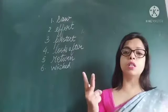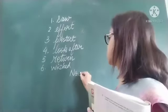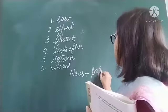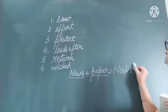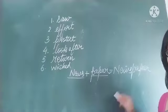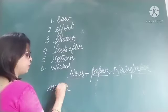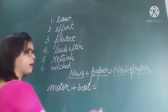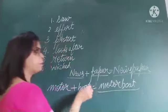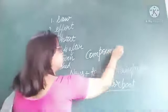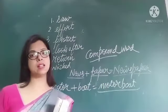Next is compound words. Compound words are formed when we combine two words to form a single new word. For example: news + paper = newspaper. Motor + boat = motorboat. The new word is different in meaning from the two original words. When we join two or more words to form a new word, that is known as a compound word.